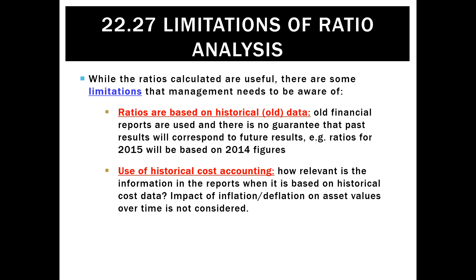Another limitation is that we also use, for the most part, historical cost accounting. That might mean, for example, we're not including the impact of inflation or deflation on asset values like property. And that will affect a number of ratios, particularly our return on assets and asset turnover ratios.